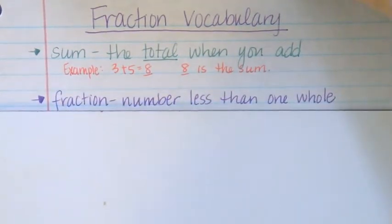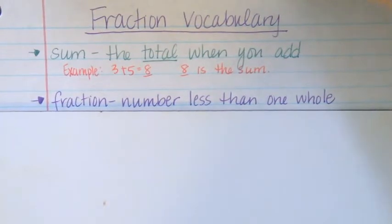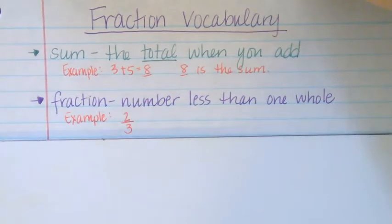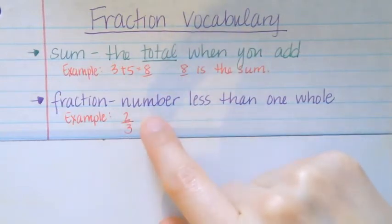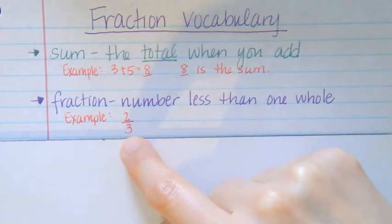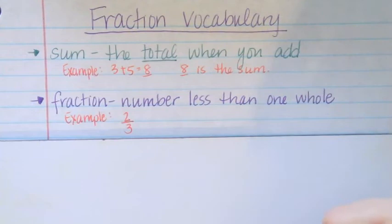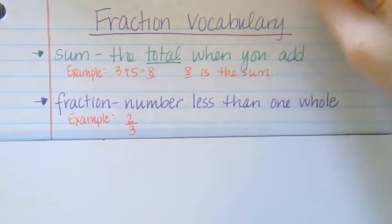Number two is fraction. A fraction is a number less than one whole. An example would be two-thirds. So anything that doesn't have the same number as numerator and denominator, anything where the numerator is less than what you see at the bottom as our denominator, would be a fraction of a number—a number that represents less than one whole. When you say it's a fraction of the whole, it means just a piece or a part of that whole number.